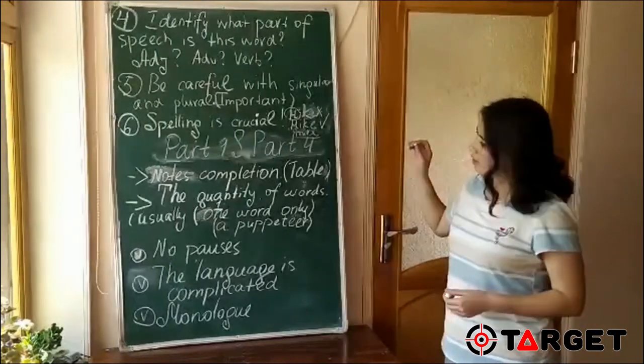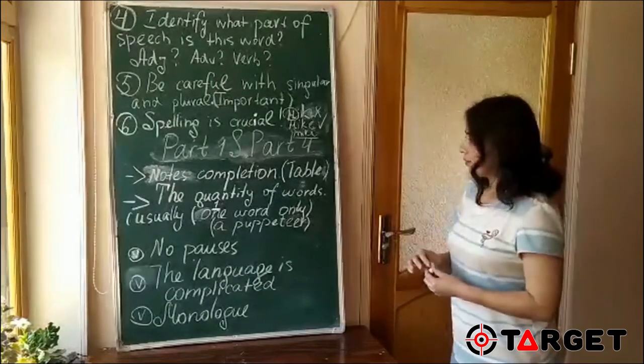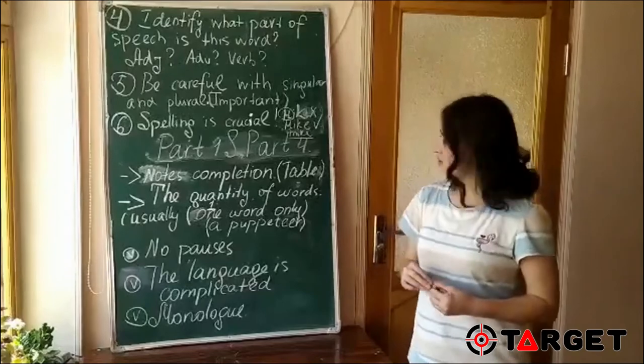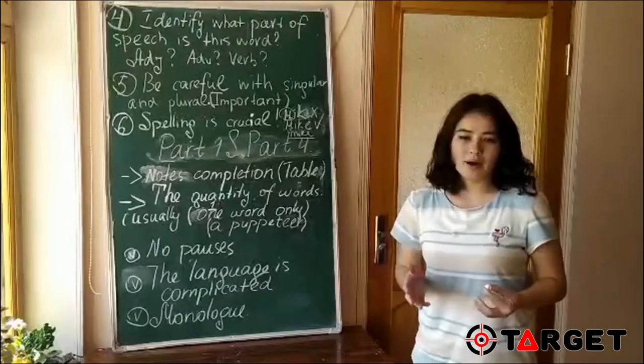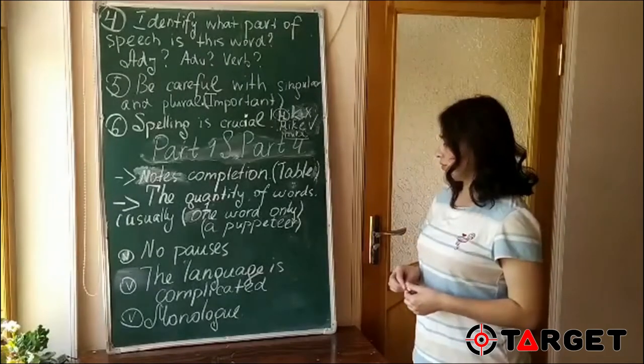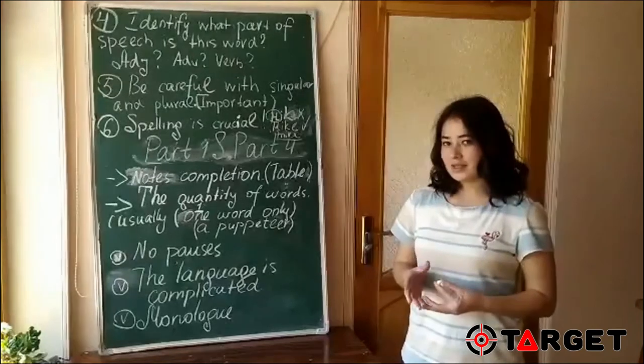And when our tips part is over, we're going to move to part one and part four. You may be wondering why did we start from part one and four? Why are we not going in order like one, two, three, four? I decided to look at these parts because for me, they are similar in some ways.